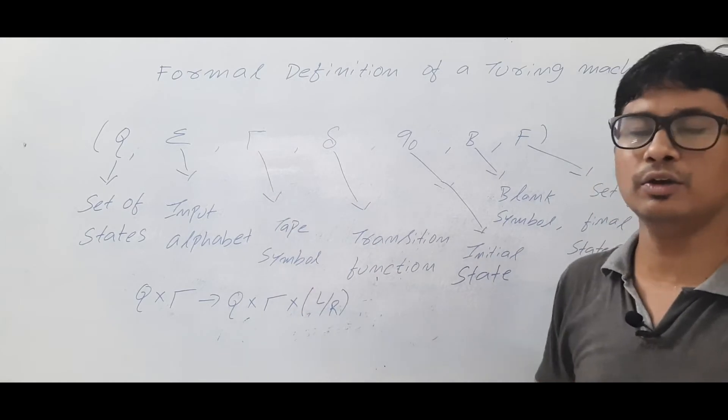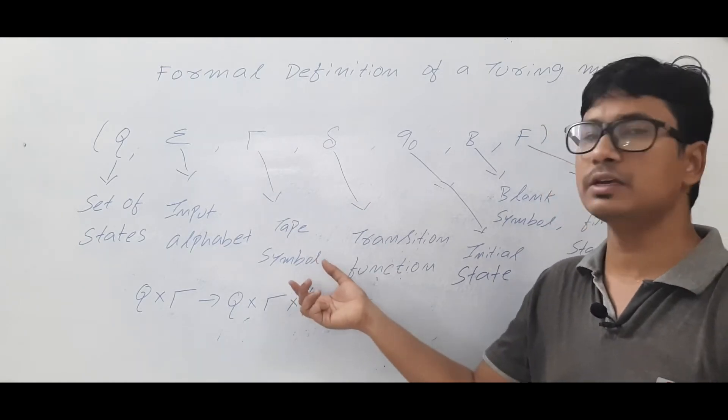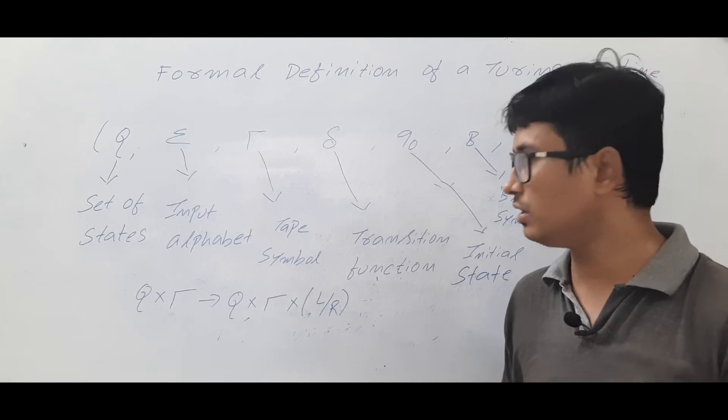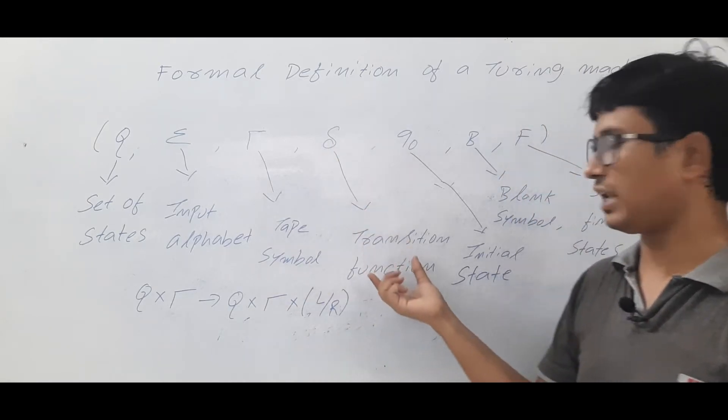You have tau, which denotes the set of tape symbols - meaning what symbols are allowed on the tape. And you have a transition function.